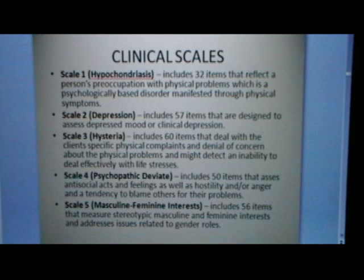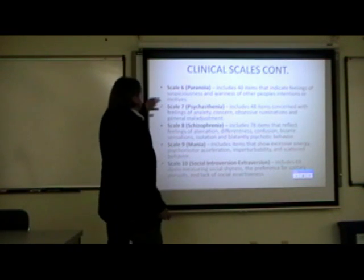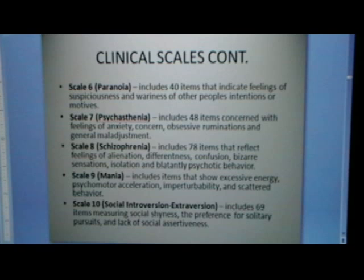Scale five measures stereotypical masculine and feminine interests. Scale six is paranoia — feelings of suspiciousness or wariness of other individuals. Scale seven is psychasthenia, a term from the 1950s that is essentially a synonym for anxiety: feelings of anxiety, concern, obsessive ruminations, and general maladjustment.